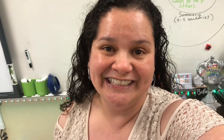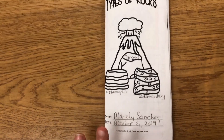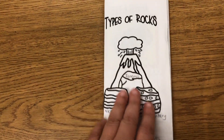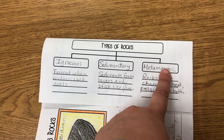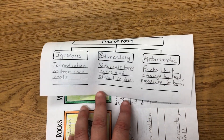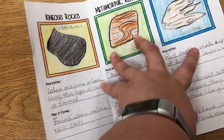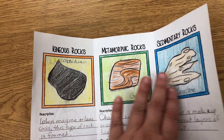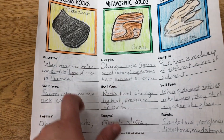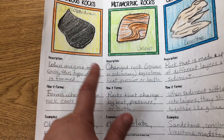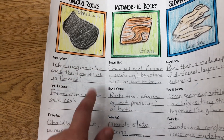I want to show you the trifold that the students were working on, because currently we are learning about the three different types of rocks and the rock cycle. This is the trifold I've created and used for several years. Inside, we start with a tree map where students had to write what the three types of rocks were and a bit about each. Then on the inside, they got to draw an example of each type of rock and give a description of how it forms.